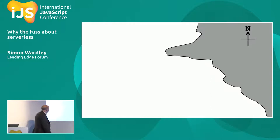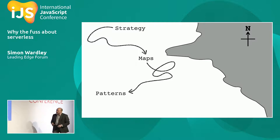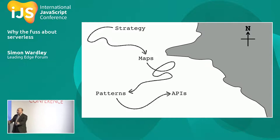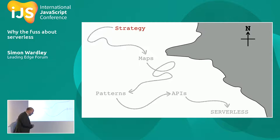Here's where we're going: I'll start by talking about the issue of strategy within business. After that, we'll talk about maps and why maps matter. Then we'll talk about economic patterns within the system, and we'll use that to explain why APIs matter — after which we'll be able to talk about serverless and why JavaScript will rule the world.